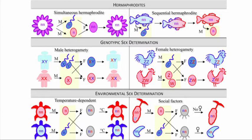There are also multiple ways in which sex is determined in the natural world. We have organisms that have both sexes at the same time, like hermaphrodites — they're both male and female either simultaneously or they might switch back and forth throughout their lifetime. We have genotypic sex determination, where sex is determined by the chromosomes, and we also have environmental sex determination, where sex is determined by conditions in the outside environment, such as social factors or temperature.